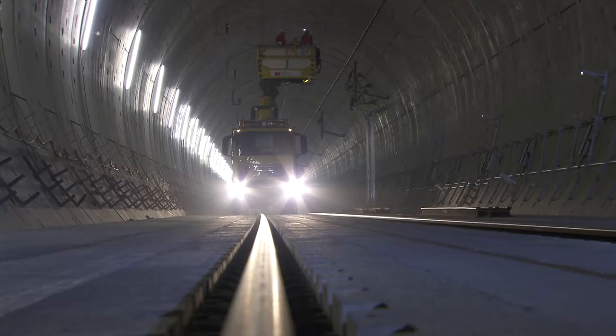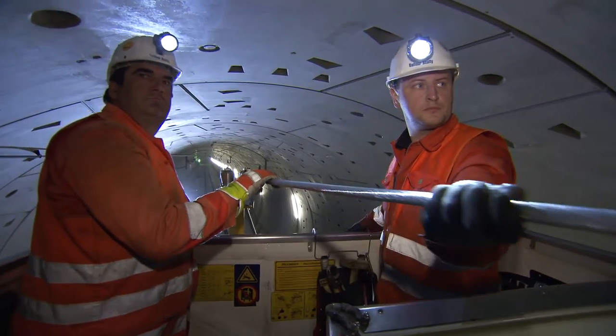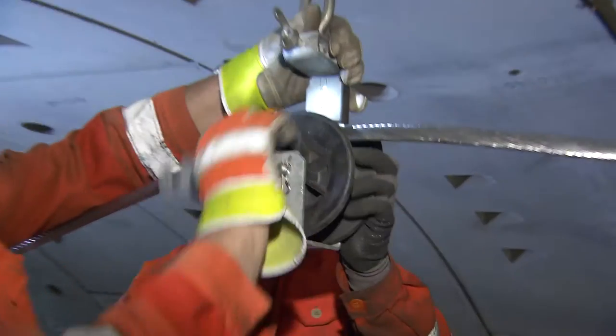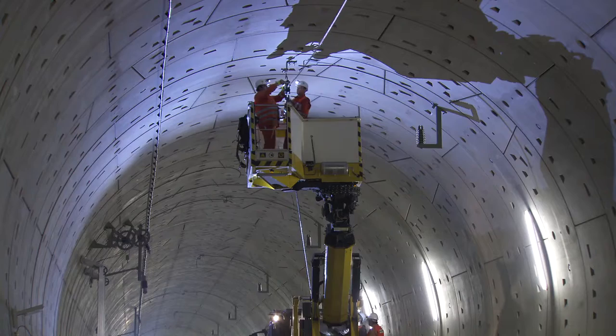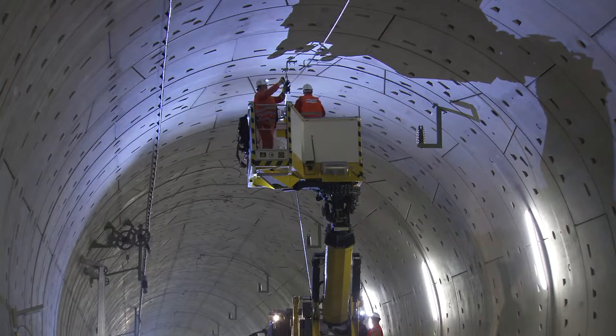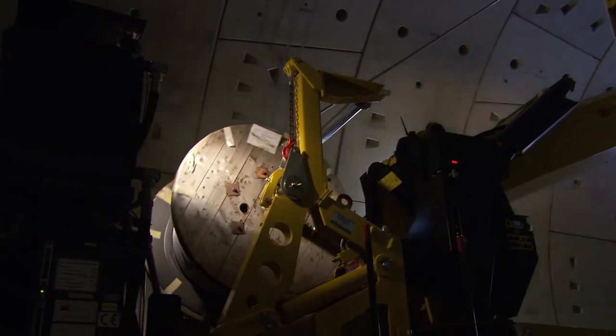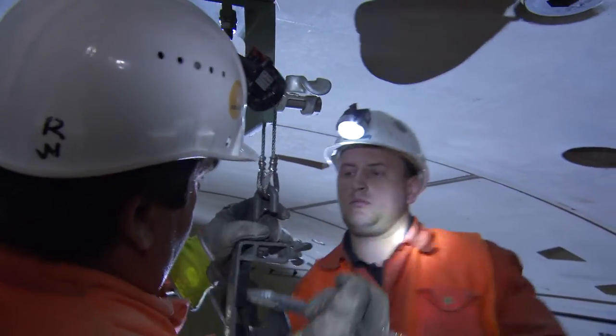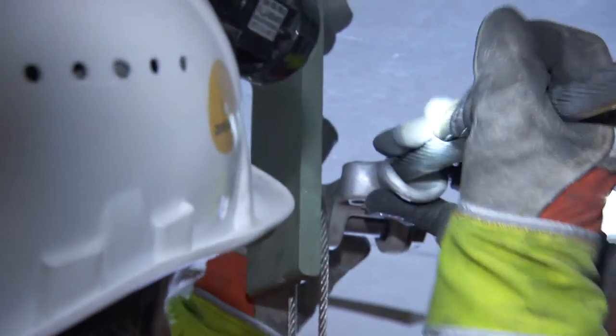Principally, traction current flows from the substation and along the overhead contact line to the power consumers on the vehicle, then back along the rails to the substation again. Inside the tunnel, all components such as suspension pillars and cantilevers have to be earthed. This is why they are connected with the return conductor that the men are installing in the tunnel roof.